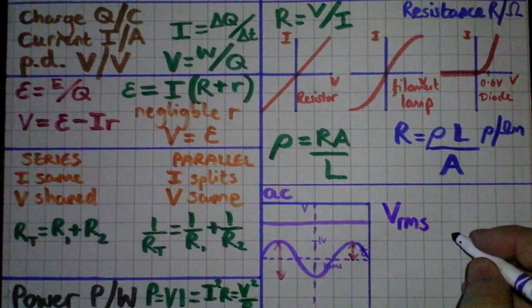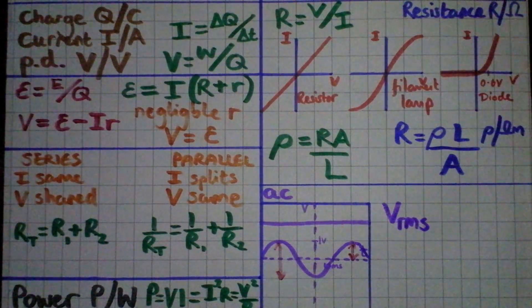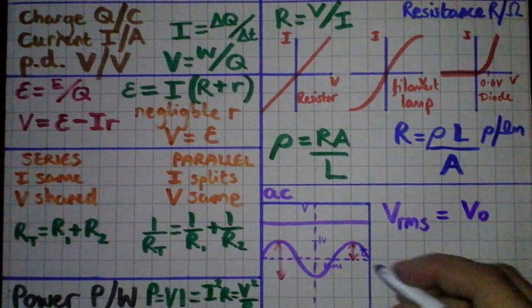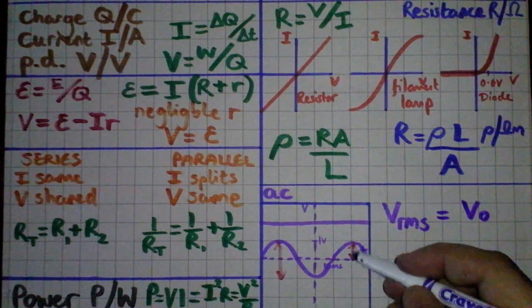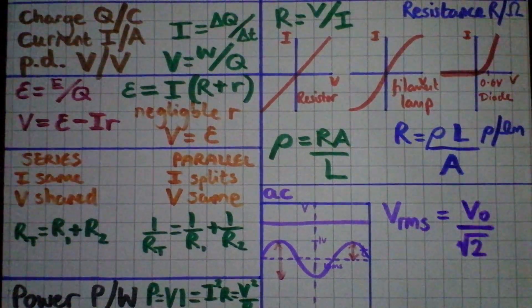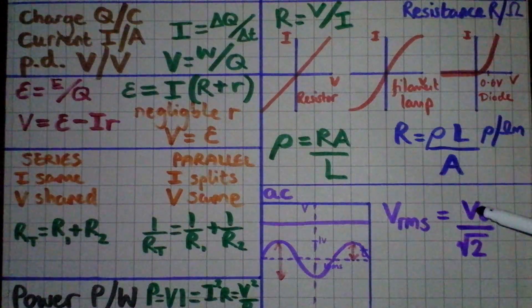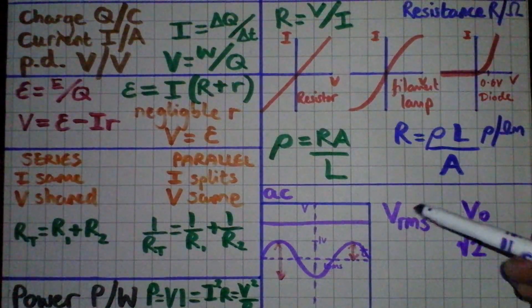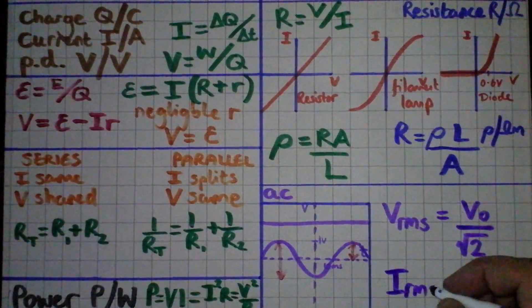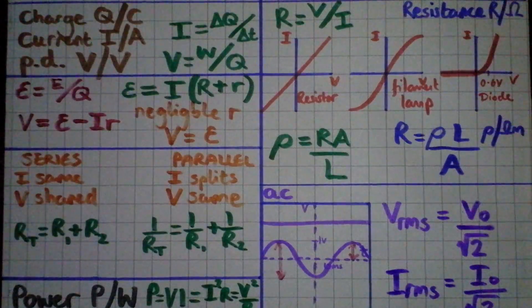To compare, we need to use something called the RMS. The RMS voltage, which stands for root mean squared, is defined as a DC voltage that would give the same heating effect as an AC voltage. If I take my AC voltage, V0, that's a peak voltage, not peak-to-peak, just a peak voltage, and I divide it by root 2, that gives me the VRMS, the equivalent DC value. So, I might have a certain value of AC voltage, divide it by root 2, and that will tell me that actually that's equivalent to a slightly lower DC value. And the good news is that that works exactly the same for current, and I just substitute in I-naught, the peak current, divide that by root 2, and that gives me the IRMS value.